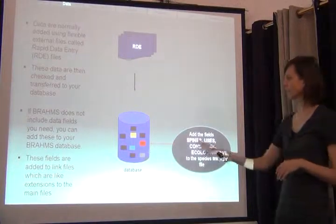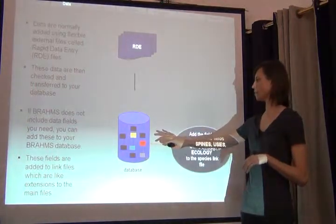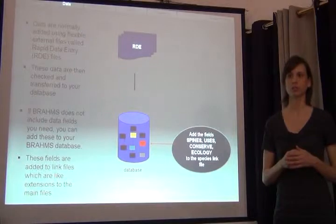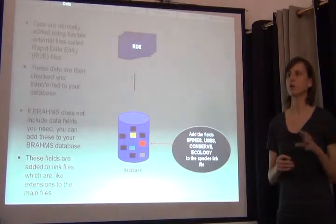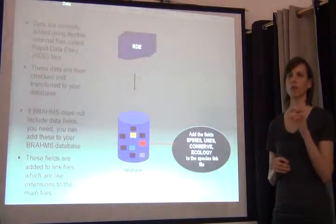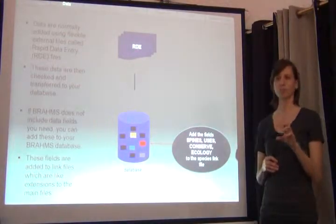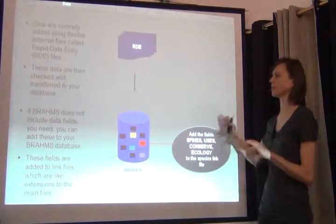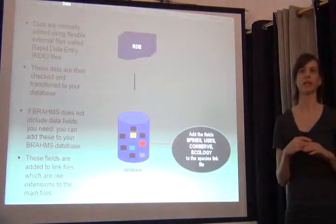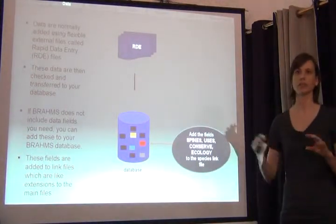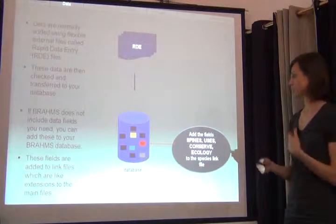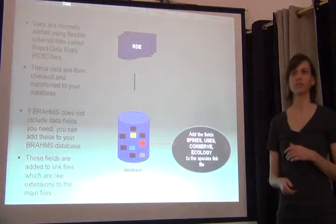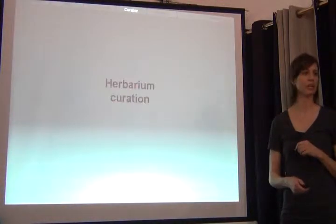You have a main database — similar to what was discussed about database structures — with a core database file for what Brahms comes with. Anything else you might want to add is attached to this main file as a separate dataset, and you can have as many extension files as needed for additional pieces of information.